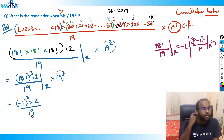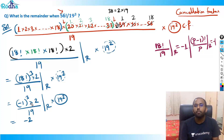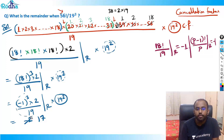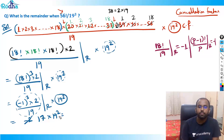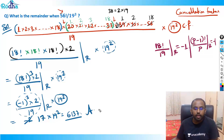So we get (−1)³ × 2 divided by 19, which is −2 divided by 19. The remainder of −2 mod 19 is 17 (since −2 + 19 = 17). Now multiply back by 19 squared: 17 × 361 = 3610 + 51×... actually 17 × 361 = 6137. So the answer to this remainder question is 6137.